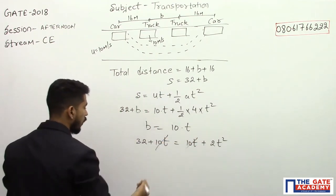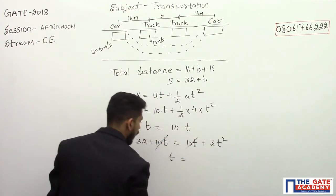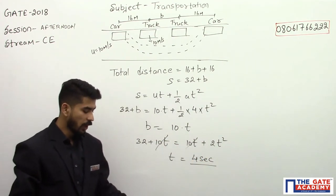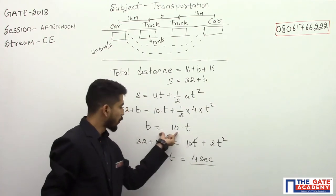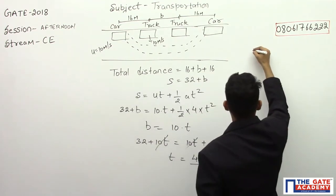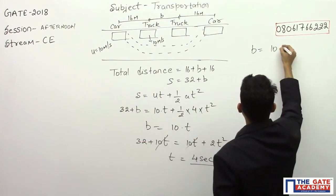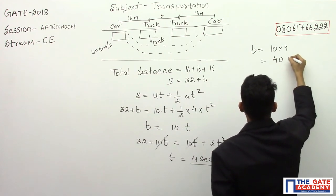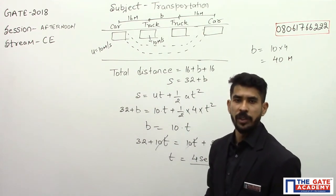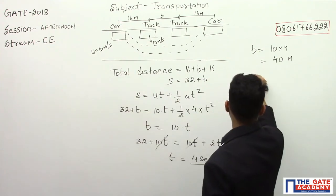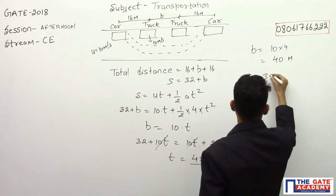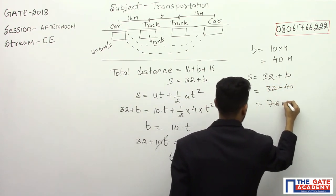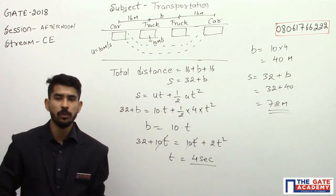Solving this, we get time t equal to 4 seconds. Substituting t equals 4 seconds, b equals 10 into 4 which is 40 meters. The total distance traveled by the car is s equals 32 plus b, which equals 32 plus 40, giving us 72 meters. So the answer is 72 meters.